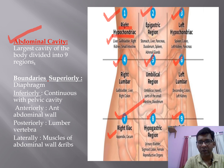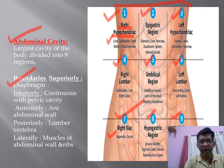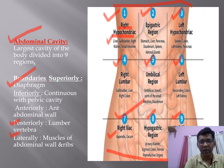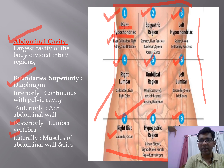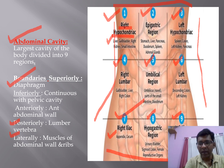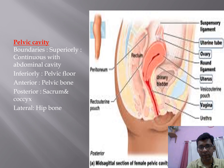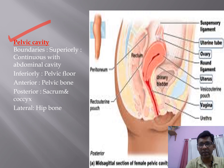The boundaries of the abdominal cavity are: superiorly the diaphragm, inferiorly continuous with the pelvic cavity, anteriorly the anterior abdominal wall, posteriorly the lumbar vertebra, and laterally the muscles of the abdominal wall and ribs. Each segment of the abdominal cavity is clinically significant — knowing which organ resides in each segment helps identify the source of pain.